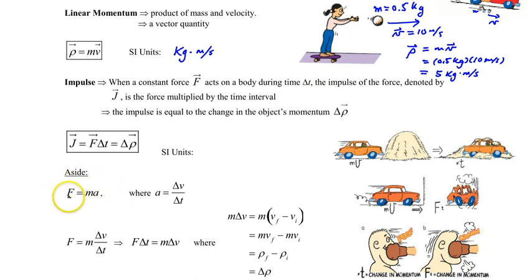If we start with F equals ma and replace the acceleration with the rate of change of velocity, delta v over delta t, we can rearrange this equation as F equals m times delta v. Now m times delta v is really the change in momentum over the change in time.